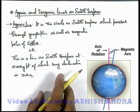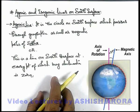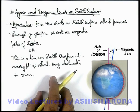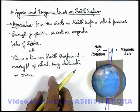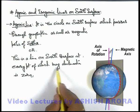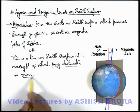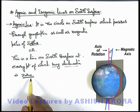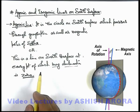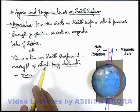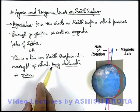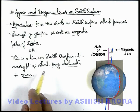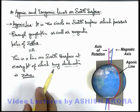This diametrical plane contains both the axis of rotation as well as magnetic axis of earth. And at every point on the circle on earth surface, we can say that the geographic meridian and magnetic meridian are in the same plane. So the magnetic declination at every point on this circle is zero. This is the circle passing through geographic as well as magnetic poles of earth, and we term this as the agonic line on earth surface.